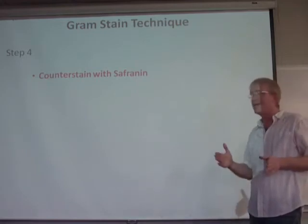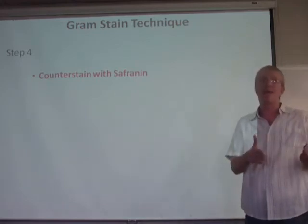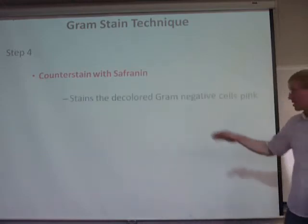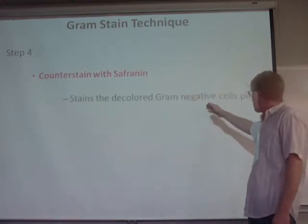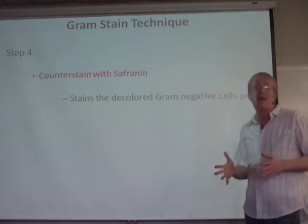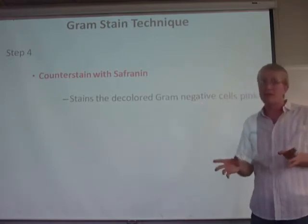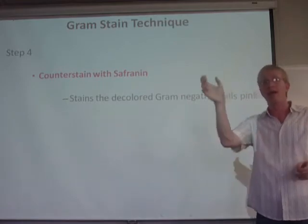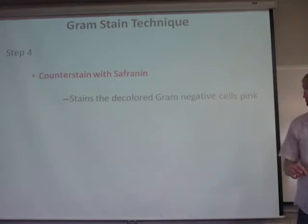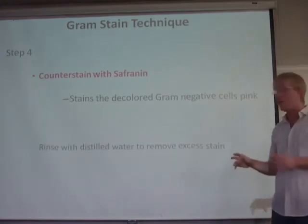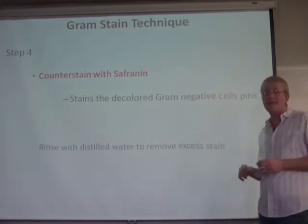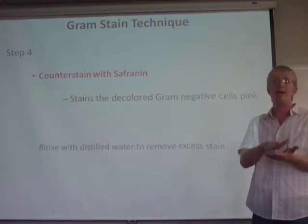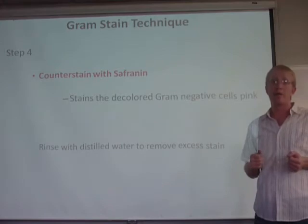Then we come to step four, which involves adding another stain called safranin. This is a red stain that stains the decolorized gram negative cells pink or red. After completing this step, we have gram positive purple bacteria and gram negative pink bacteria. We rinse once more with distilled water to remove excess stain, then use bibulous paper to blot it dry and examine it under a microscope.